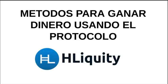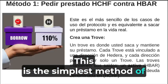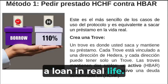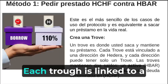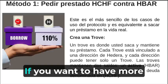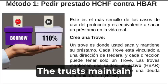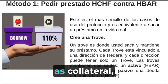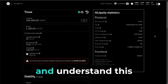Now let's get to the most important part of the video: the methods to make money using the Agile Equity Protocol. Method one: borrow HCHF against HBAR. This is the simplest method — equivalent to taking out a loan in real life. You create a trough, which is where you take out and maintain your loan. Each trough is linked to a single Hedera address, and each address can only have one trough. If you want more than one credit, you need more than one wallet — the restriction is by wallet, not by person. The trough maintains two balances: HBAR as collateral, and a debt denominated in HCHF.